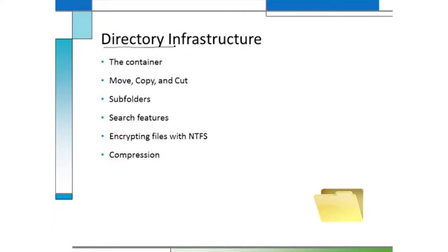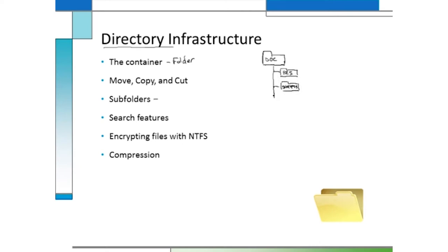The directory infrastructure is what we call the way in which we store and organize our files. We start off with a container that we often call a folder. The folder itself doesn't contain data — it is designed as a placeholder. Within a folder like 'My Documents,' I might choose to have a number of subfolders. If these are all my documents, I'll have some for personal information like a resume, another folder for all my spreadsheets, or another folder for all my databases. We call them folders or containers because we're just organizing our data.